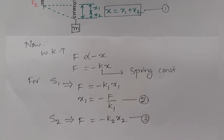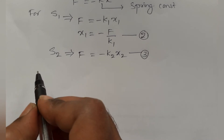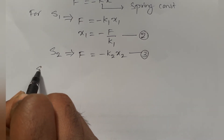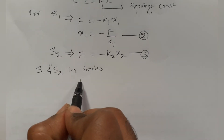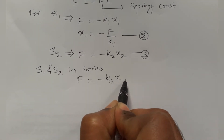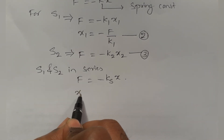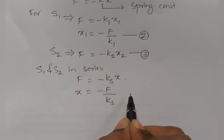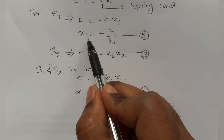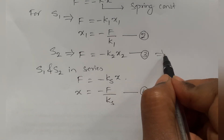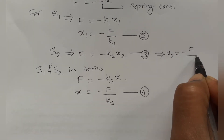Now for the combination of S1 and S2 in series, we have the equation F = −KS·X, where X is the total extension taking place. So X can be written as X = −F / KS. This is equation number 4. So we have X1 = −F/K1 from equation 2, and X2 = −F/K2.